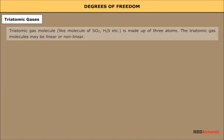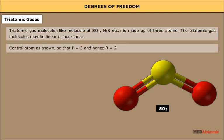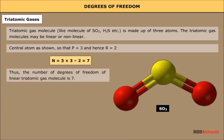Triatomic gases: a triatomic gas molecule like SO₂ or H₂S is made up of three atoms. Triatomic gas molecules may be linear or nonlinear. For a linear triatomic molecule, P = 3 and R = 2, so n = 3 × 3 - 2 = 7. Thus the number of degrees of freedom of a linear triatomic gas molecule is 7.